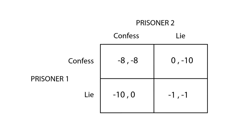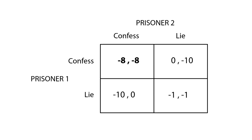If none of them confesses, they will both be charged the lesser sentence — a year of prison each. The police will try to convince each prisoner to confess the crime by offering them to go free, while the other prisoner will be sentenced to a 10-year term. If both prisoners confess, each prisoner will be sentenced to 8 years.